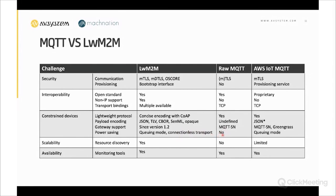On scalability: resource discovery capabilities are part of the LwM2M standard, not defined in raw MQTT, with partial functionality offered by the AWS device shadow. On availability: monitoring tools are supported across all of these systems.